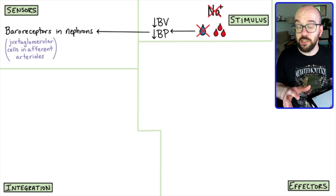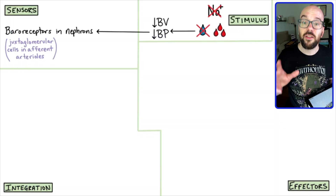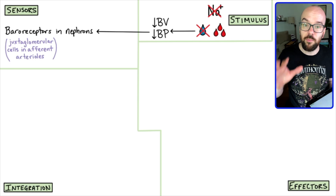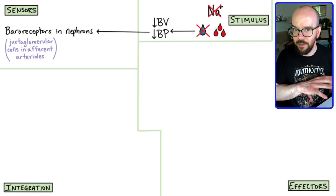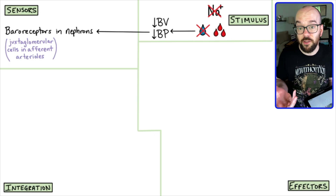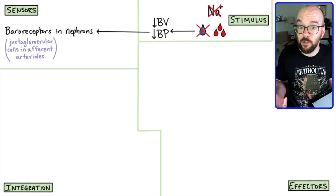When those juxtaglomerular cells detect that the blood pressure is low, they're going to send out something called renin — but we're not to that yet on the diagram. We've got another sensor to look at first.